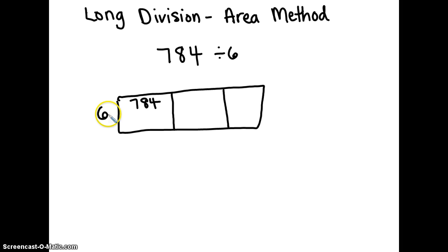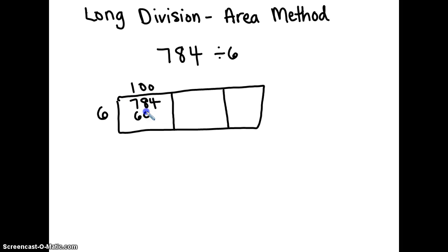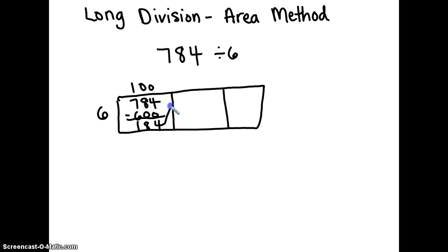Check if six can go into seven from seven hundred eighty four — it goes in one time. Add the zeros for the hundreds place: six times one hundred is six hundred. Then six hundred subtracted from seven hundred eighty four equals one hundred eighty four.